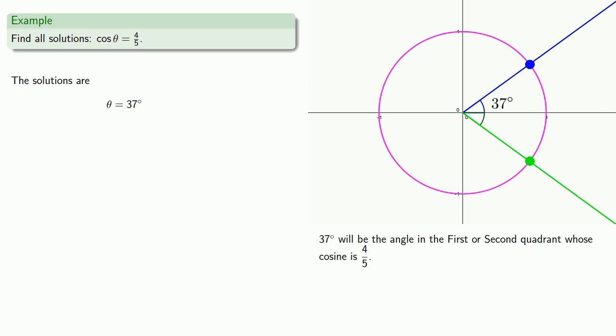What about this angle in the fourth quadrant? How can we find that? The thing to recognize is the other angle is a reflection of this angle across the x-axis. So its measure will be minus 37 degrees.